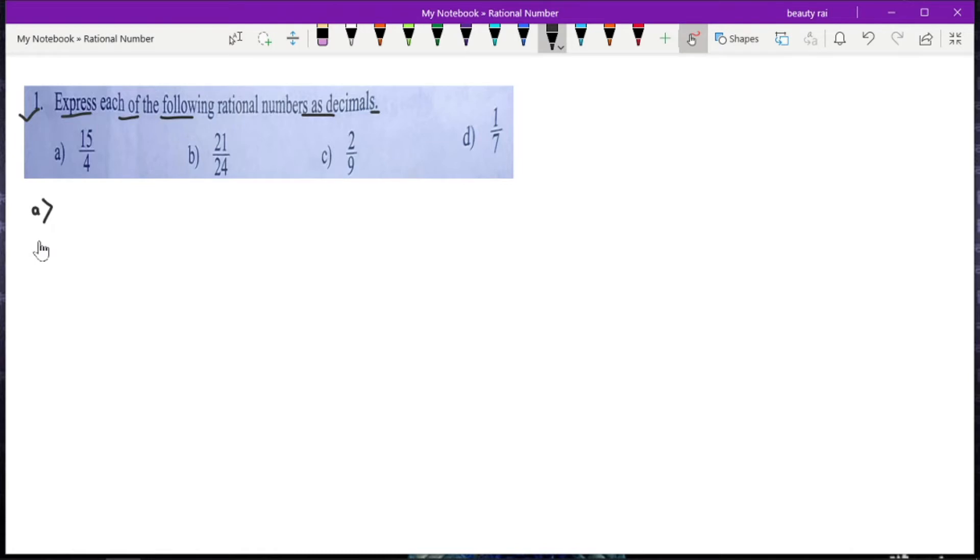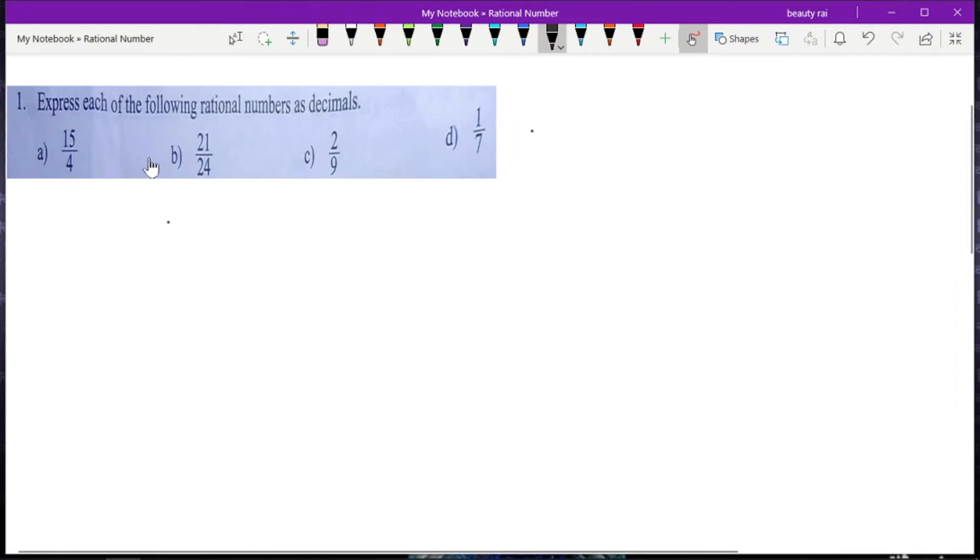To convert the given rational number into a decimal, we have to divide its numerator by the denominator. In this question, I will solve part a and part c for you, and part b and part d will be your homework. So let's start with part a.